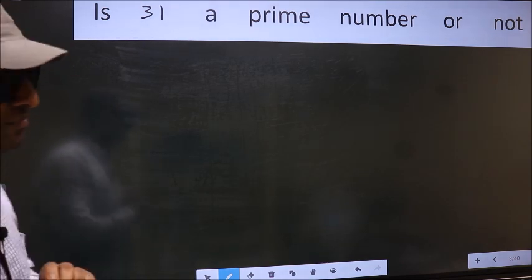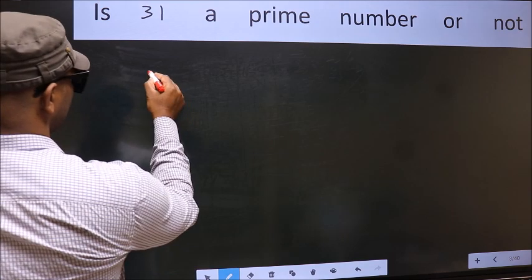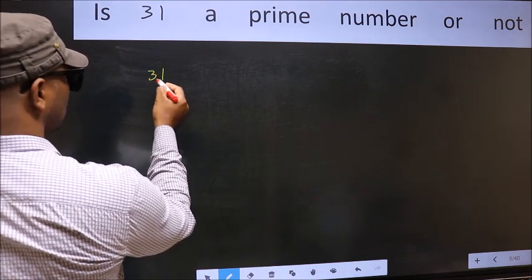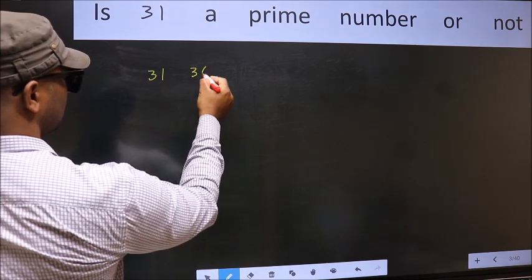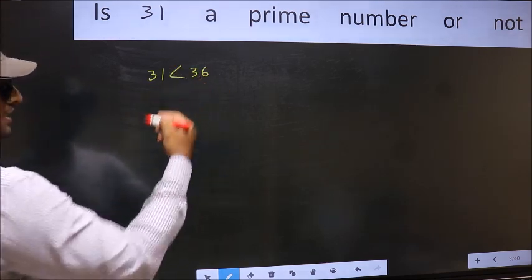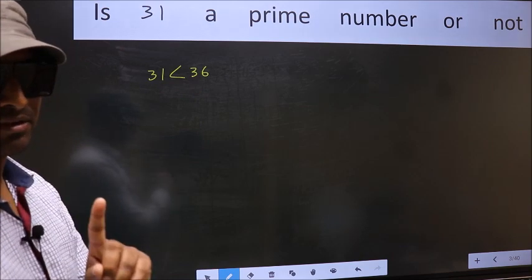Step 1: Given number is 31. You should write a perfect square number close to 31, that is 36. This is your step 1.